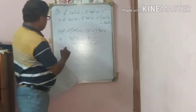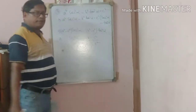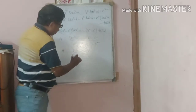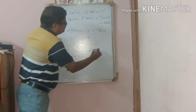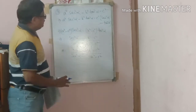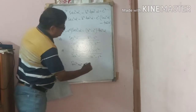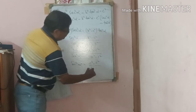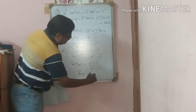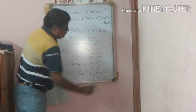Now sec²α / tan²α = (1/cos²α) / (sin²α/cos²α) = 1/sin²α. So 1/sin²α = (b² − c²) / (a² − c²), which is reciprocal, giving sin²α = (a² − c²) / (b² − c²). Therefore sinα = ±√[(a² − c²) / (b² − c²)].